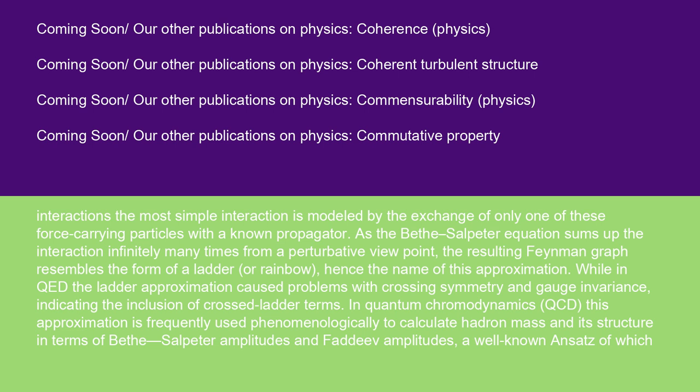The most simple interaction is modeled by the exchange of only one of these force-carrying particles with a known propagator. As the Bethe-Salpeter equation sums up the interaction infinitely many times from a perturbative viewpoint, the resulting Feynman graph resembles the form of a ladder or rainbow, hence the name of this approximation. While in QED the ladder approximation causes problems with crossing symmetry and gauge invariance, indicating the inclusion of cross-ladder terms.